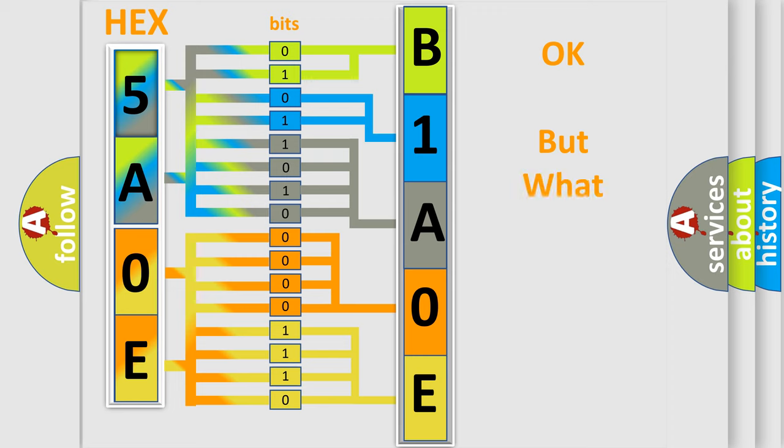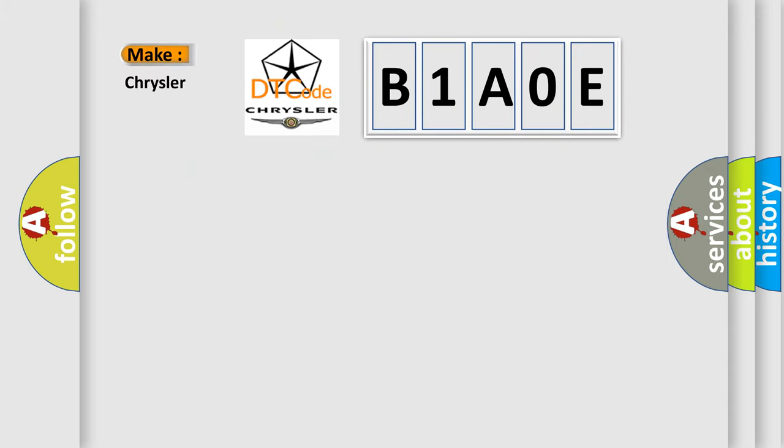We now know in what way the diagnostic tool translates the received information into a more comprehensible format. The number itself does not make sense to us if we cannot assign information about what it actually expresses. So, what does the diagnostic trouble code B1A0E interpret specifically for Chrysler car manufacturers?